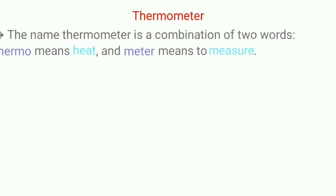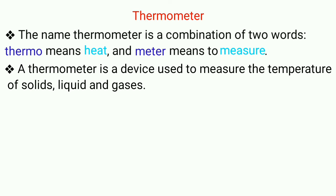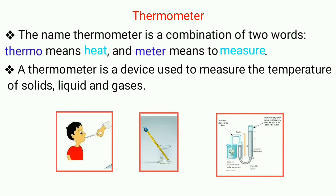First one is thermometer. It is a very basic type of temperature sensor, contact sensor. Thermometer is a combination of two words thermo that means heat and meter that means to measure. So thermometer basically measures temperature of a solid, liquid or gas.